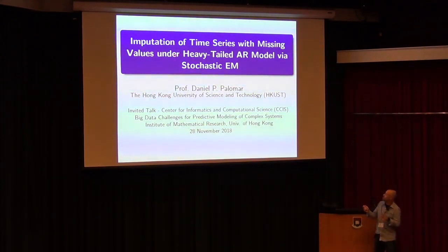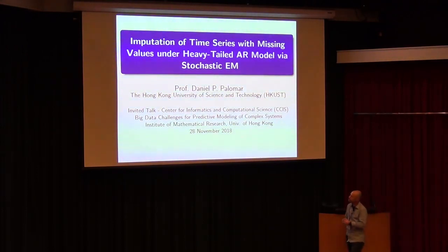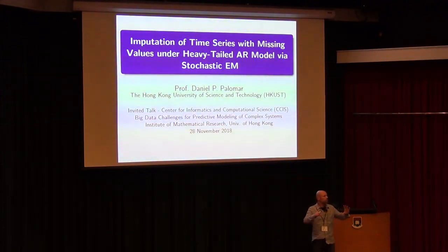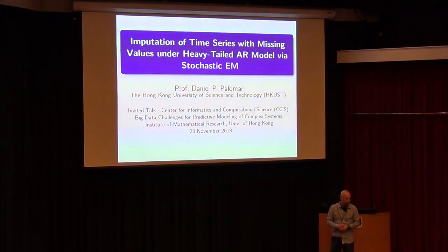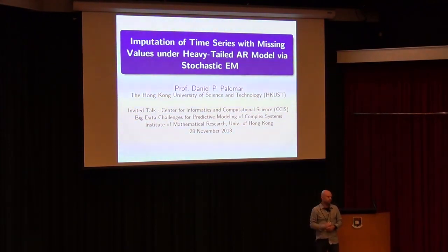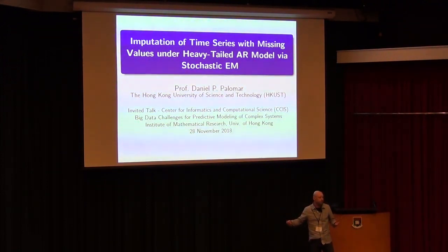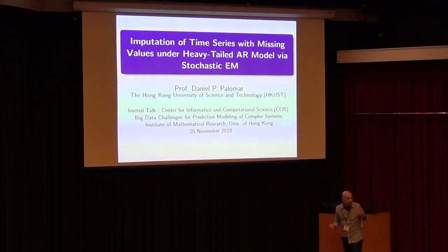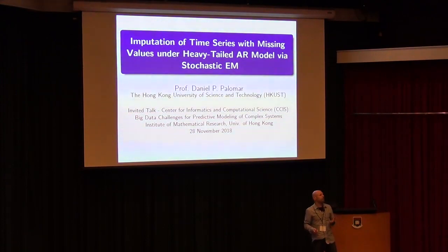Let me explain what it means, because maybe you are not familiar with this terminology. Basically, whenever you want to process information, you collect the observations in a big matrix, and then you do whatever you have to do. The problem is that in many applications, there are always some missing values in that matrix. Whatever algorithm you are going to use later, it is not going to work when you have these missing values. This is a big problem in practice. Imputation refers to dealing with those missing values, basically filling them in somehow. That is what it means.